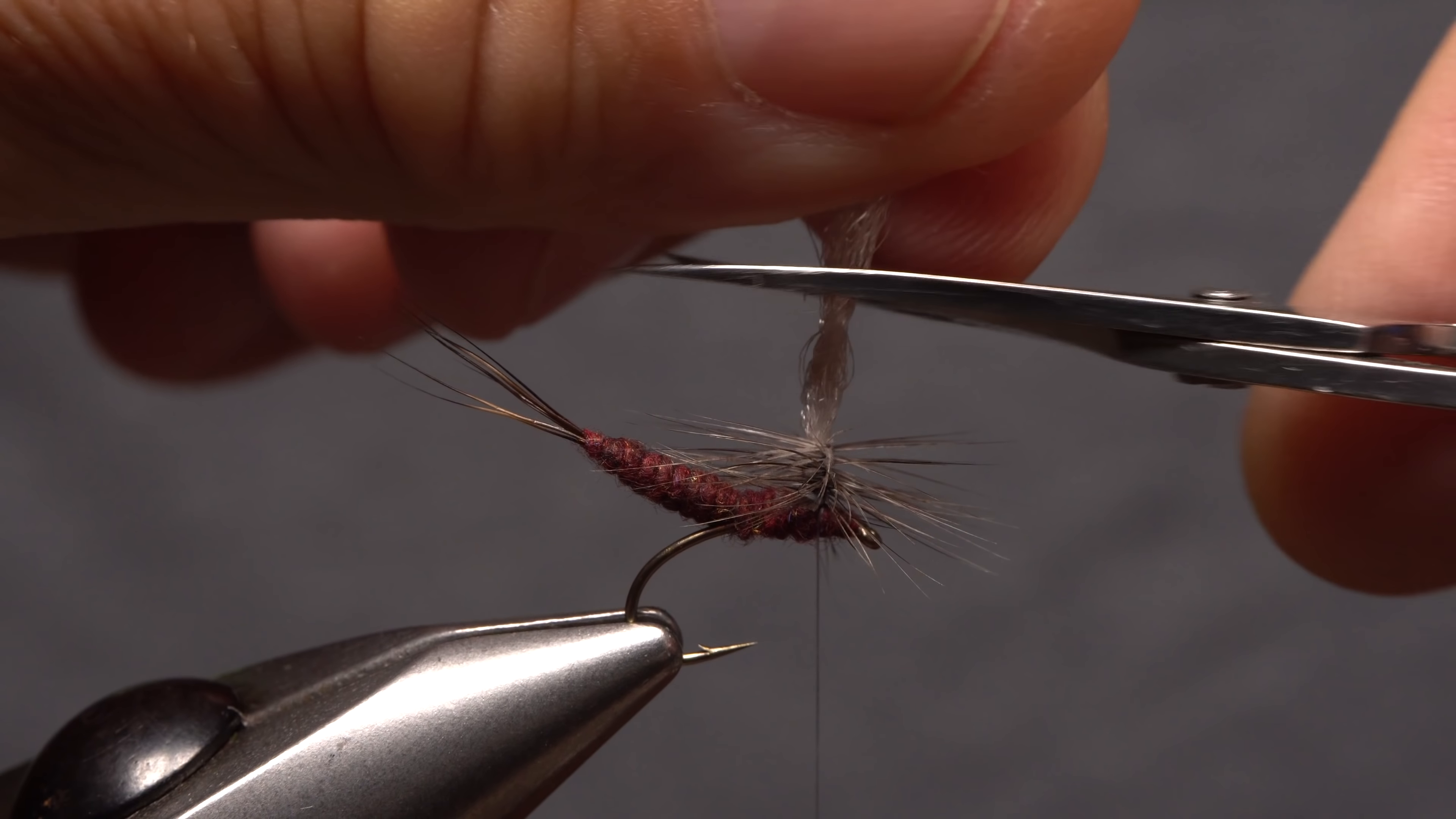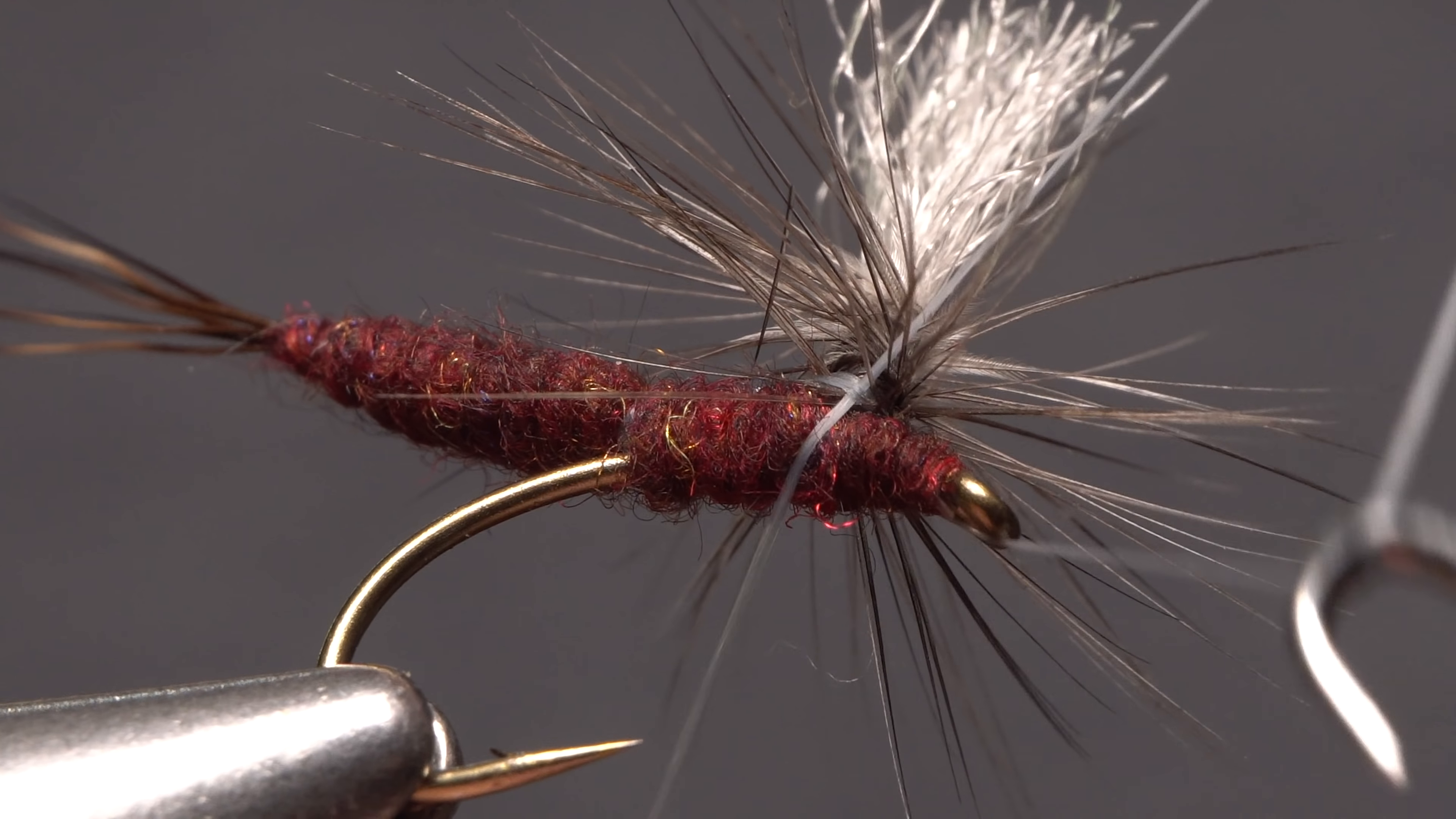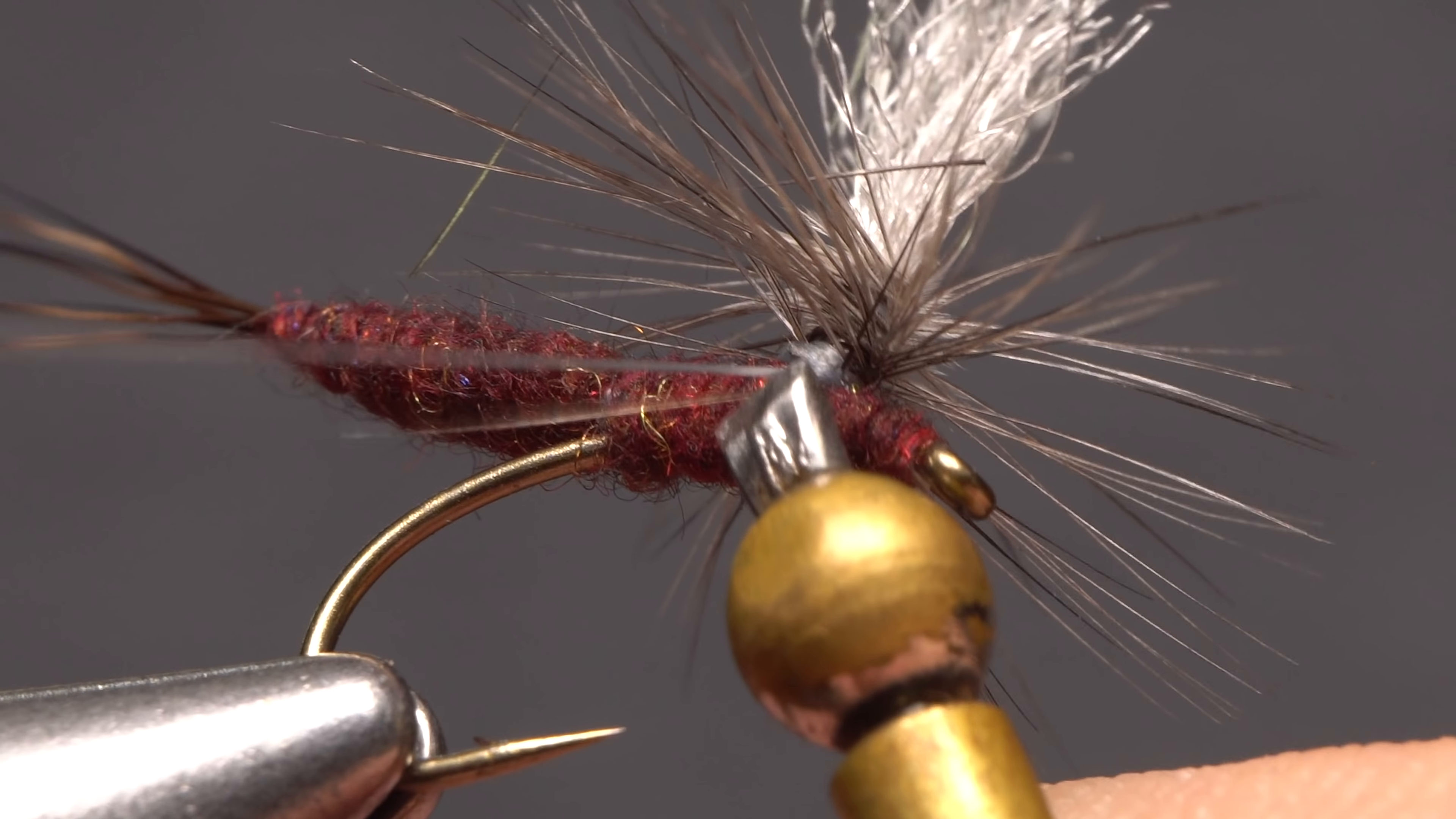Now's a good time to trim the wing post off so it's about the same length as the fly's extended body. Again, reach for your whip finish tool, and this time, use it to do a four or five turn whip finish around the base of the post, seat the knot well, and snip or cut your tying thread free.